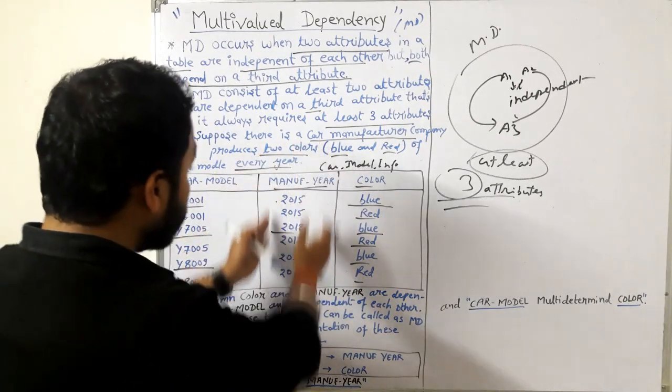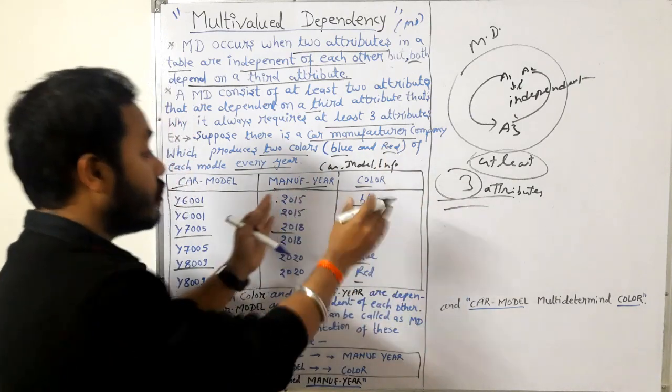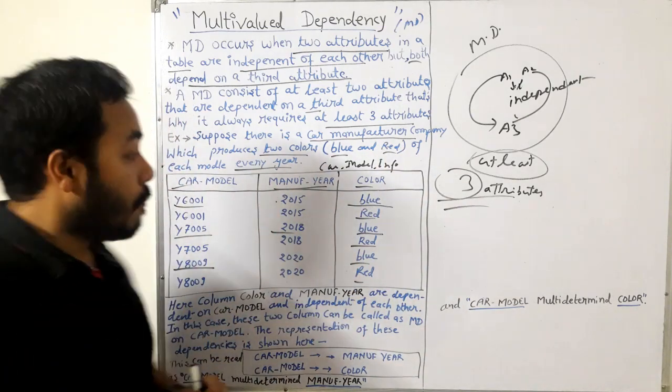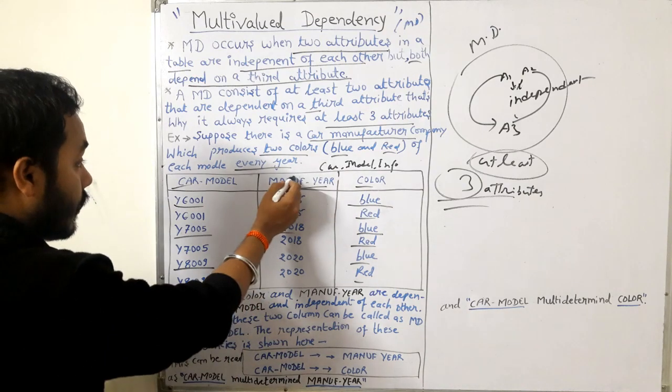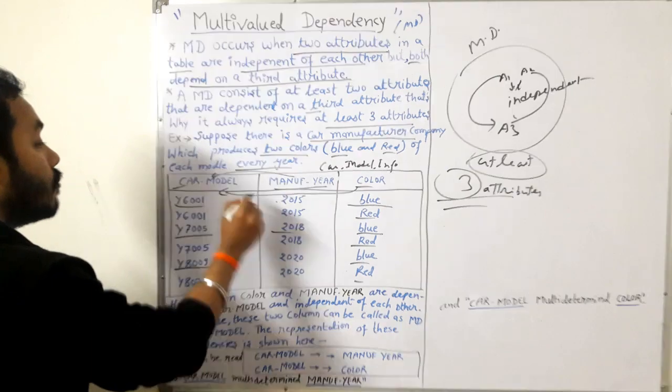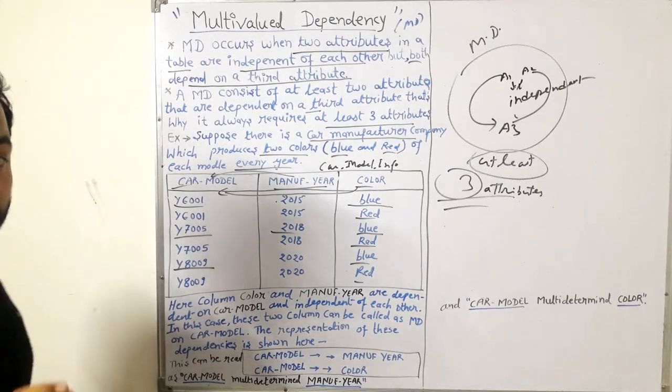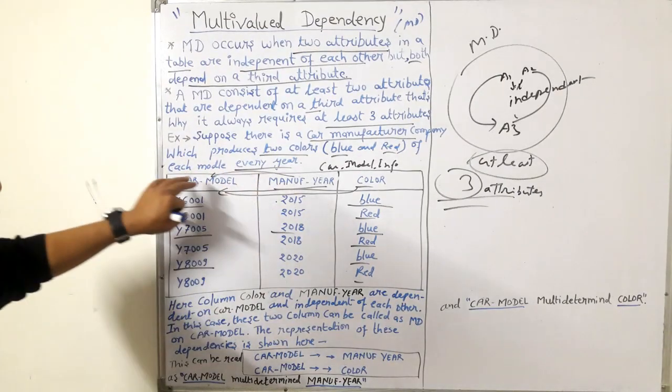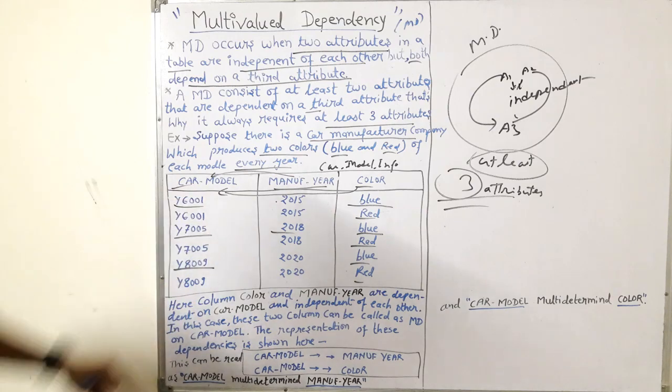This manufacturer year and this color, these two are independent attributes. But they are actually depending on what? Car model. Got my point? Both of them are dependent on the car model.